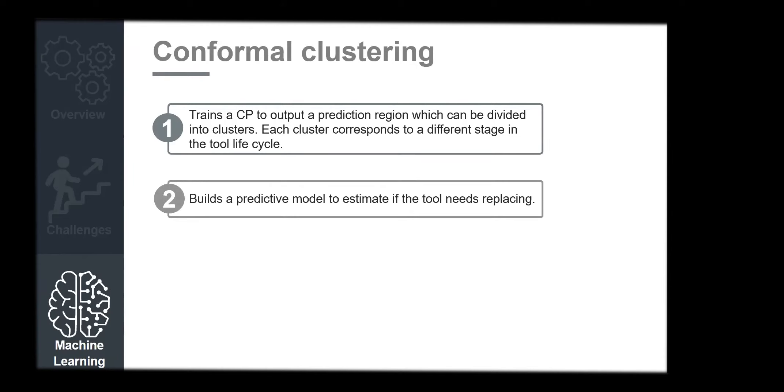Our plan is that right now, another challenge is that we don't have enough data to predict tool life. But over the next 12 months, we are going to keep collecting data on that machine and whatever tool goes on to that machine. We will divide our work into two stages. The first stage: we will train a conformal predictor to output a prediction region which can be divided into clusters. Each cluster will correspond to a different stage in the tool life. For example, A will be a brand new tool, B lightly used, C well used, and the final one needs replacing.